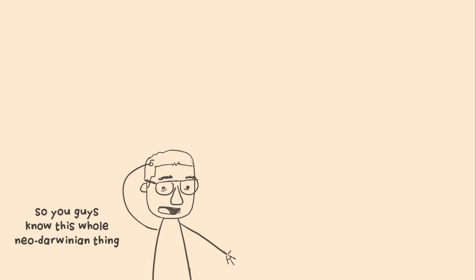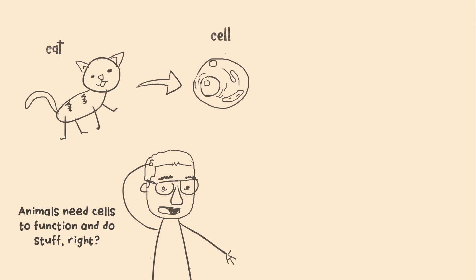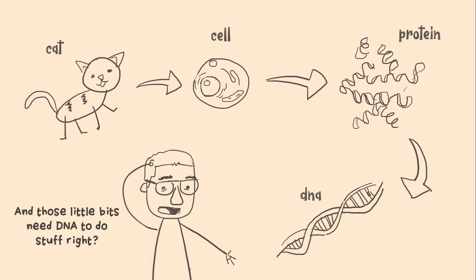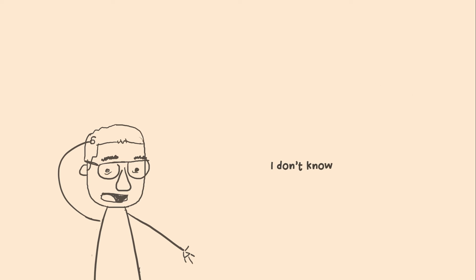Okay, so you guys know this whole Neo-Darwinian thing, it's not looking so hot right now. Animals need cells to function and do stuff, right? Right. And cells need little bits to do stuff, right? Yup. And those little bits need DNA to do stuff, right? Uh-huh. Well, maybe we should, I don't know, calculate the chances of that sort of thing happening.